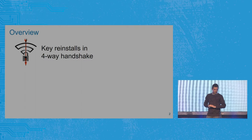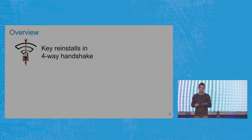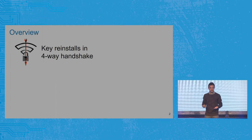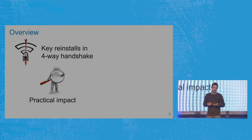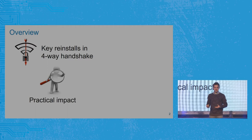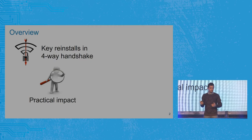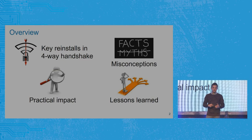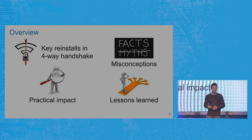So how am I going to structure the talk? I'm first going to explain the core idea of the vulnerability against the so-called four-way handshake. I'm going to give some background on how the handshake works, and then discuss the details of the attack. After that, I'll explain the impact in practice — what can an attacker do, in which cases is the bug serious, and in which cases is the impact rather low. Then I'll discuss a few misconceptions floating around on the internet, and finally some lessons we can learn from this research, including how to coordinate vulnerability disclosure in a case like this.